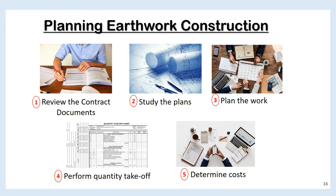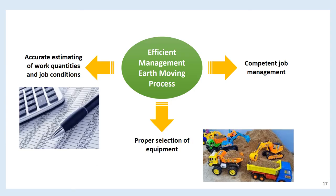Earthwork involves five stages for planning: one, review the contract; two, study the plans; three, plan the work; four, perform quantity take-off; five, determine costs. A site visit is strongly recommended to relate the physical site characteristics to the work details. Efficient management of the earthmoving process requires competent job management, proper selection of equipment, and accurate estimating of work quantities and job conditions.